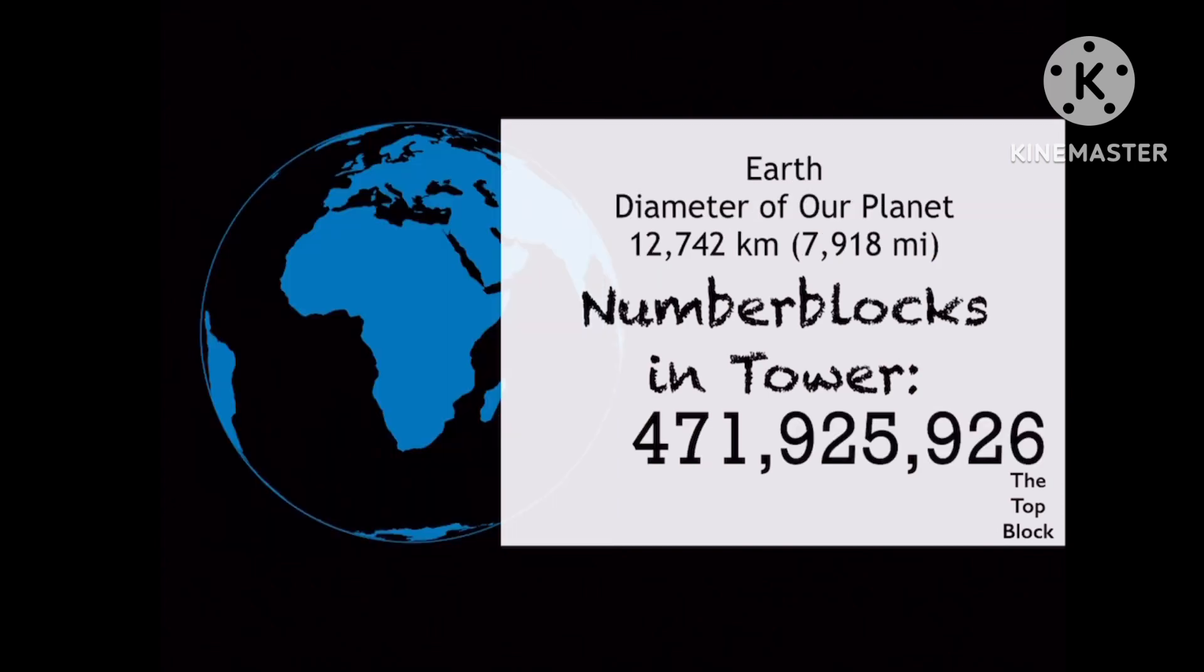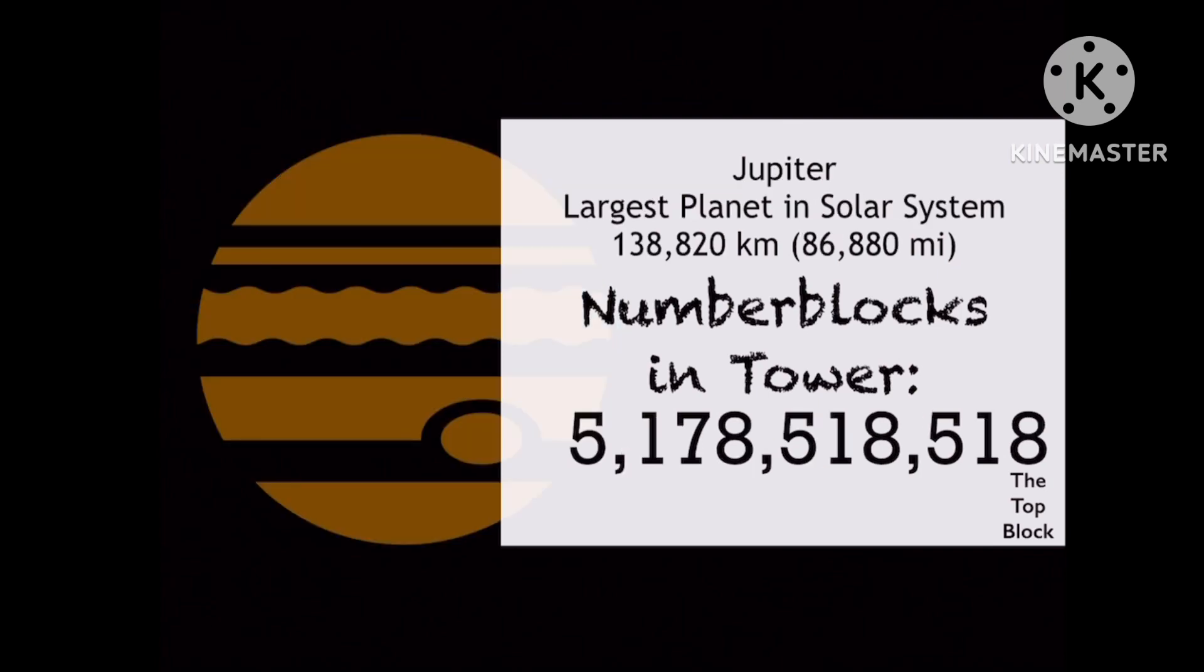The Earth is not quite a perfect sphere, but its diameter is approximately 472 million number blocks. Jupiter, the largest planet in our solar system, has a diameter of over 5 billion number blocks.